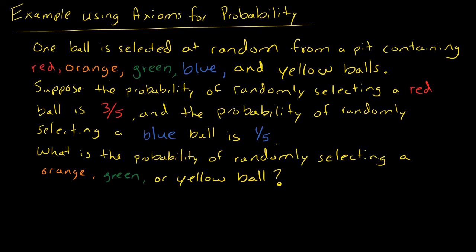The probability of randomly selecting a red ball is 3 over 5. As I'm reading, I like to write some key stuff down. So the probability of getting red is 3 over 5. The probability of randomly selecting a blue ball is 1 over 5.